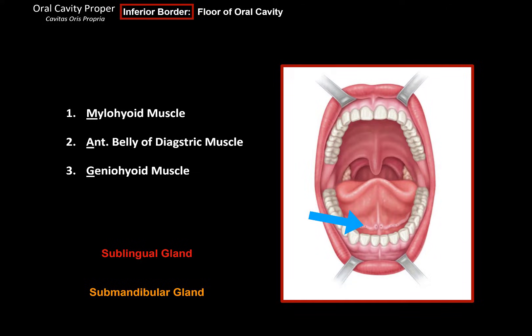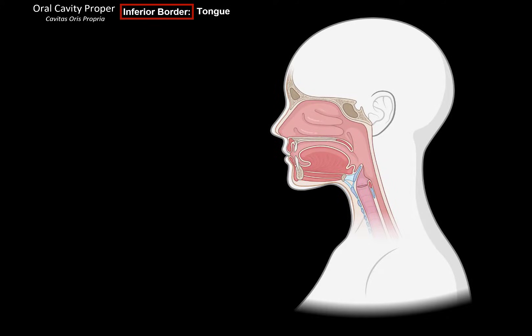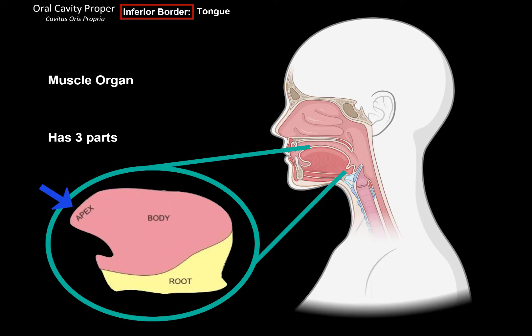The other important structure of the inferior border is the tongue. One thing to remember about the tongue is that it's not a single muscle but a muscle organ, meaning it's comprised of several muscles. The tongue is composed of three main parts: the apex, which is the tip of the tongue, a body, and a root.